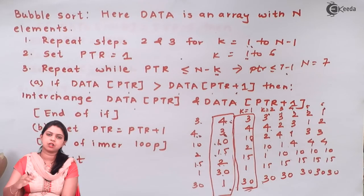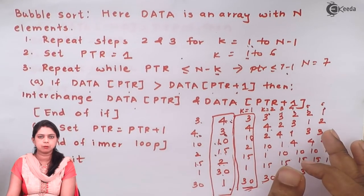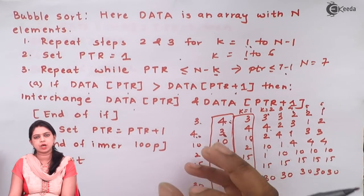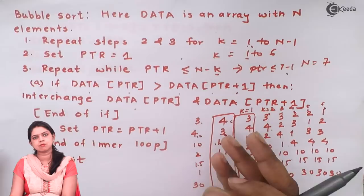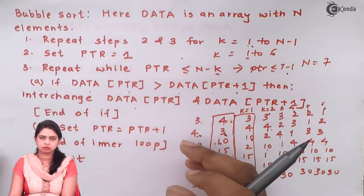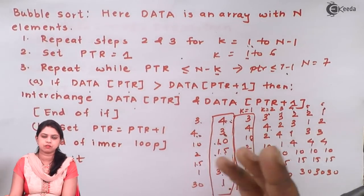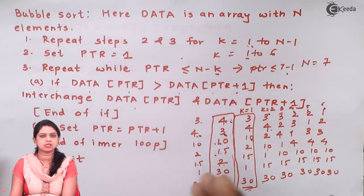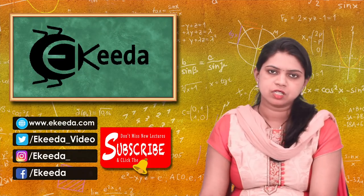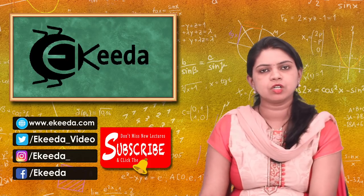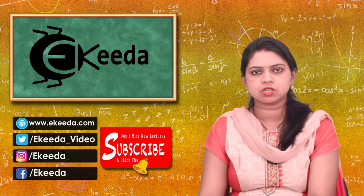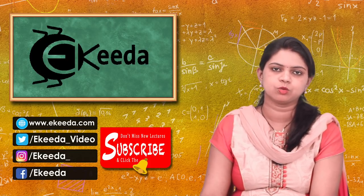The sorting algorithms we have studied are very important. Out of these algorithms, at least one comes in the board exam for 3 or 4 marks. If it comes for 4 marks, examples are also expected. Thanks for watching — I hope you have understood all the data structure operations along with their algorithms.